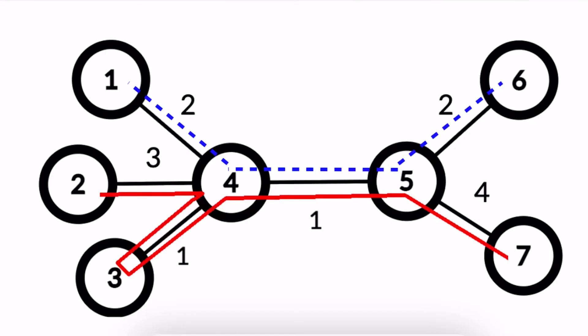This is Evgeny Kapun, and I am presenting the solution for problem J. In this problem, the task was to cover a weighted tree with two paths such that their total length is minimal possible.